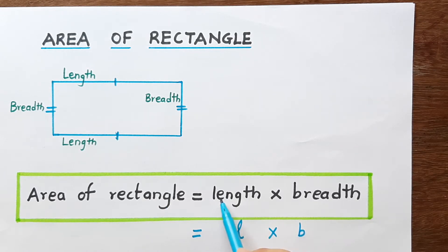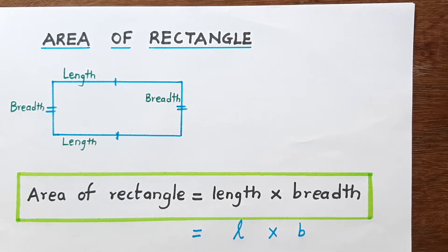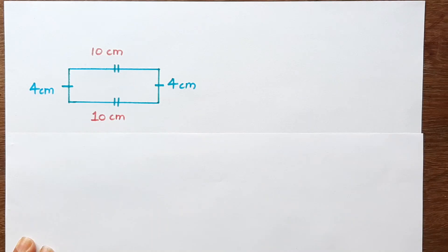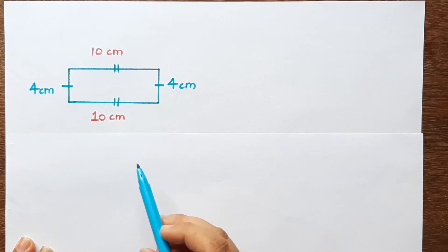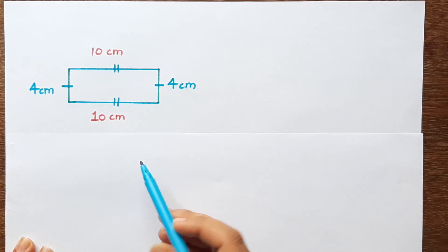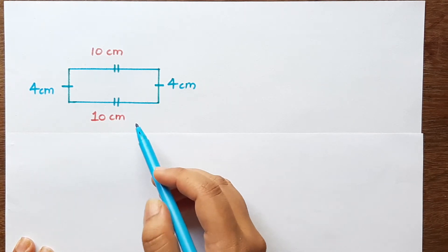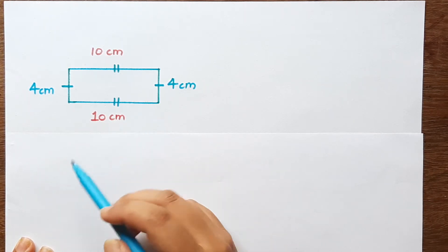If you have the spelling as length into breadth, you can write it that way as well. Here, you are given a rectangle and you have to find the area of this rectangle.